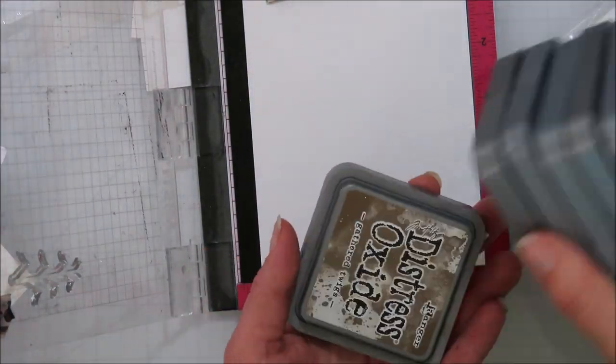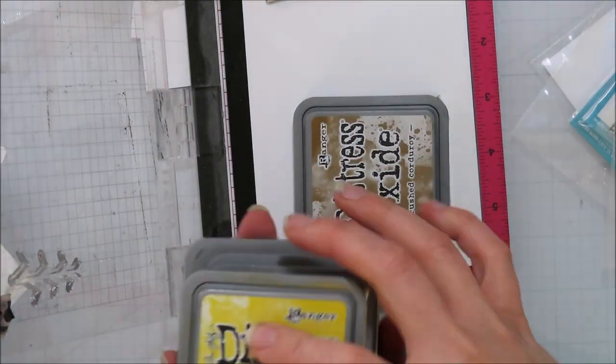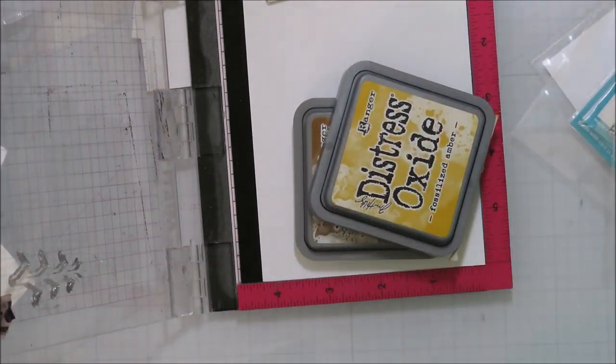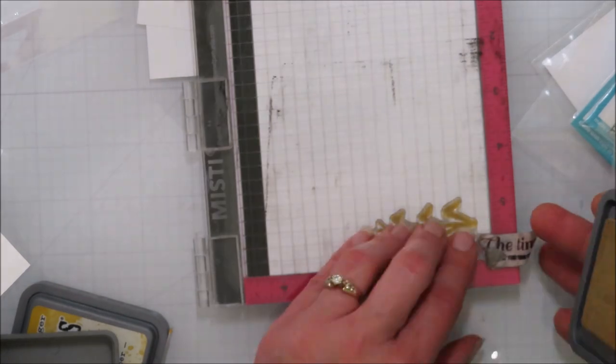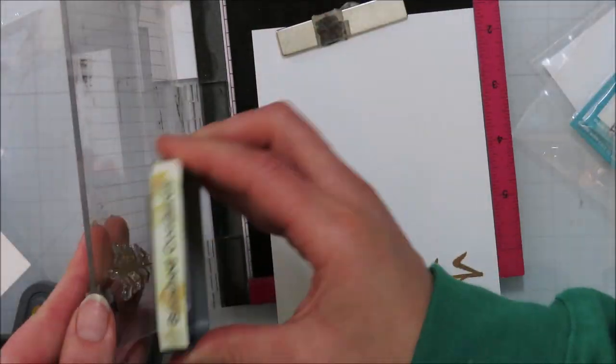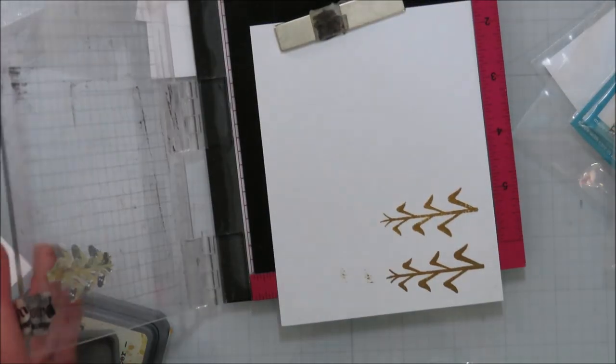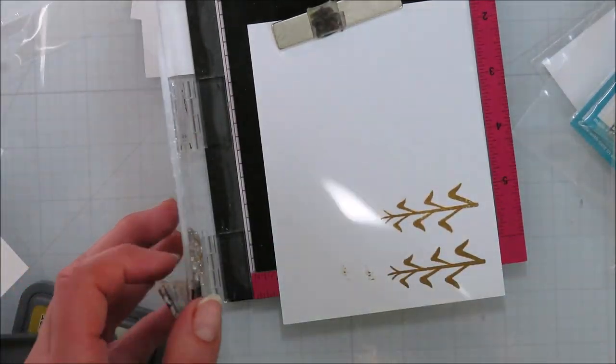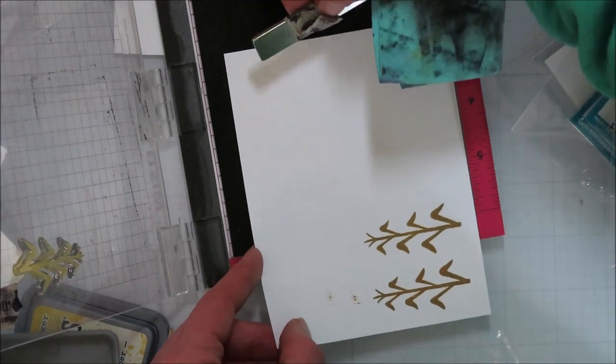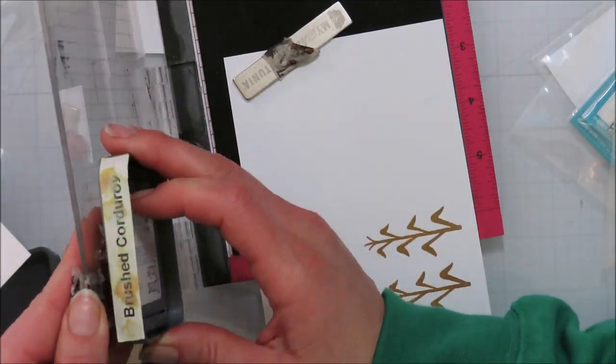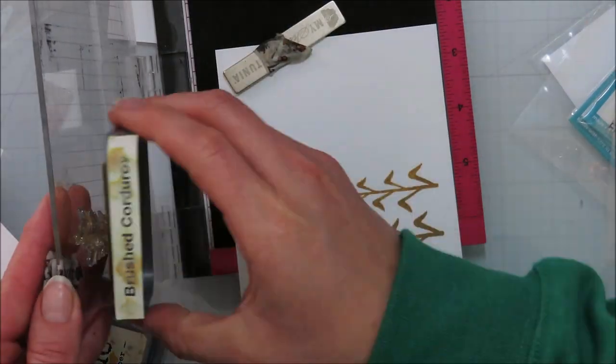So I just recently picked up the Happy Harvest stamp set from Lawn Fawn. It's been on my list for a while and so this year it made it in the basket, so to say. I did not buy the coordinating dies, which might not have been a good choice with this one, but I got it to work on the Brother Scan and Cut. So far, so good.